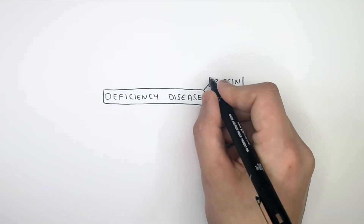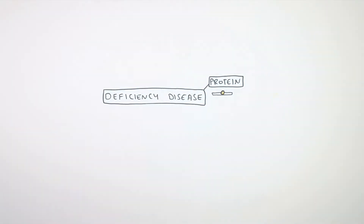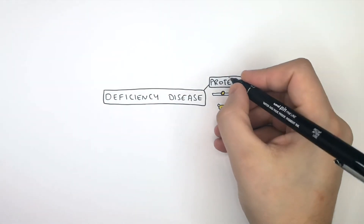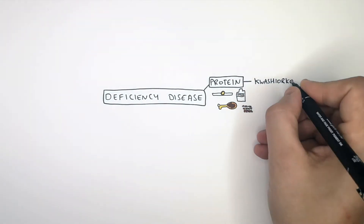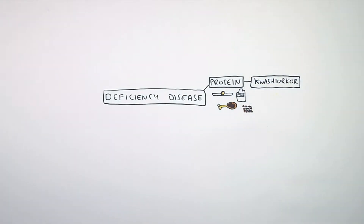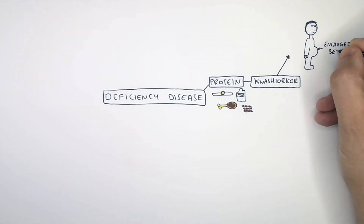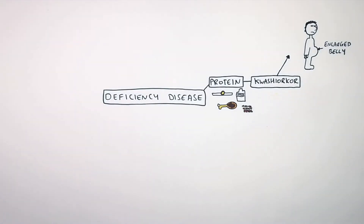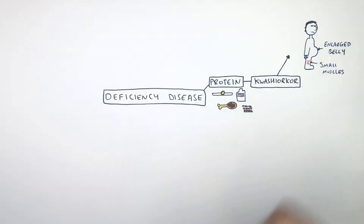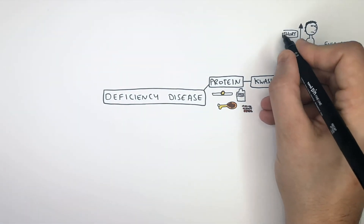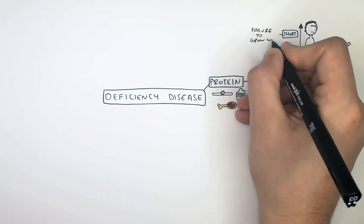A deficiency of protein — for example if you don't eat enough eggs, milk, meat or lentils, these are all examples of foods with protein in them — then you could get a disease called kwashiorkor. The famous symptom of kwashiorkor is an enlarged belly, so it looks like they're healthy or overweight, but in fact it's because they're bloated. Kwashiorkor, a protein deficiency, will also cause small muscles and the person will be shorter than normal due to a failure to grow properly.